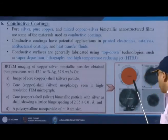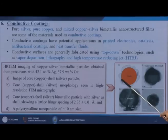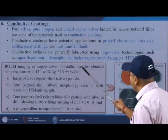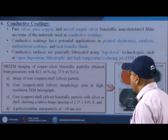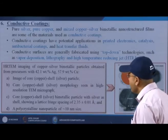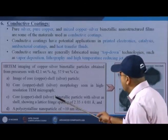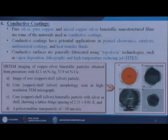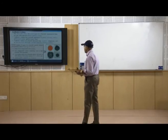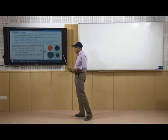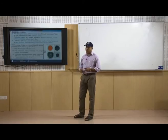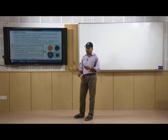As an example, copper is used as the core and silver as the shell material. In HRTEM imaging of copper-silver bimetallic particles obtained from precursors with 42.1% silver and 57.98% copper: image A shows the core-copper shell-silver particle schematic; B shows the core-copper and shell morphology in high resolution TEM; C shows the copper bimetallic particle with silver shell displaying lattice fringe spacing of 2.35 ± 0.01 Å; D shows a polycrystalline nanoparticle of 10 nm size, proving that silver has very good affinity and coating thickness on copper particles.